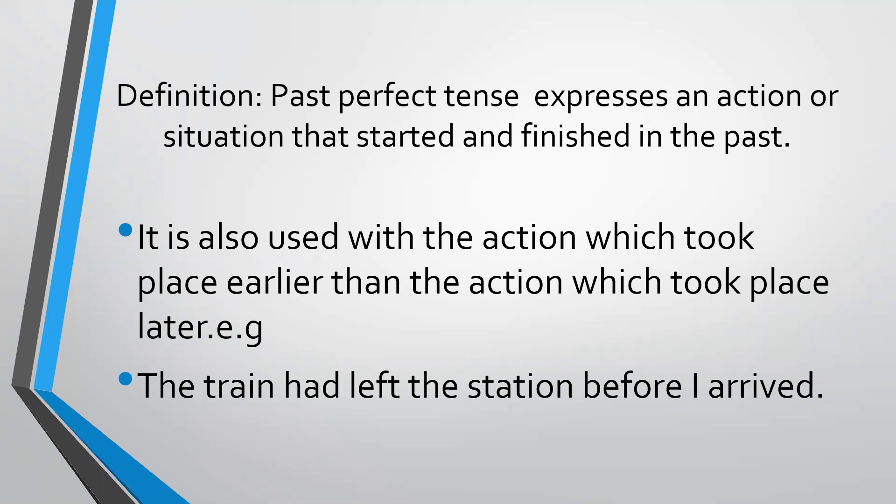For example: 'The train had left the station before I arrived.' Here there are two actions — the train left the station and I arrived — and there is a time conjunction 'before' between the two clauses. The train had left the station first, and I arrived later. This is an example of the double action of past perfect tense.